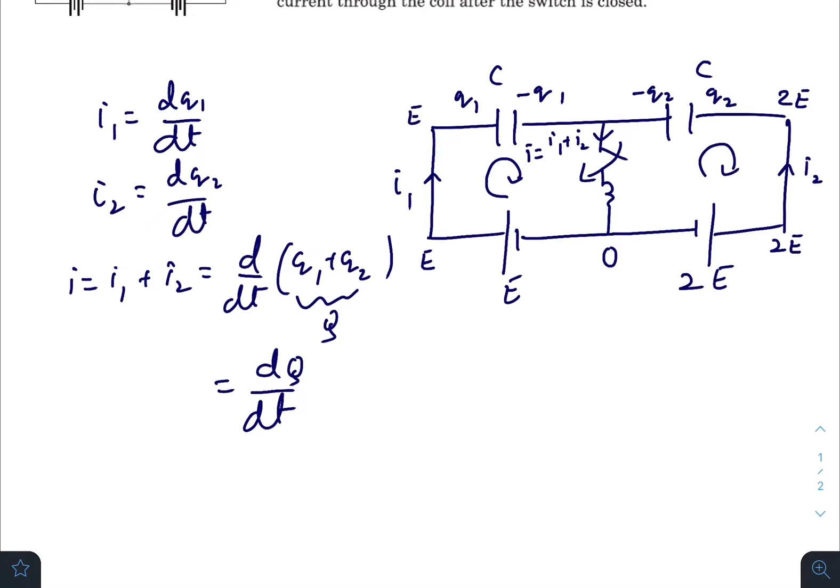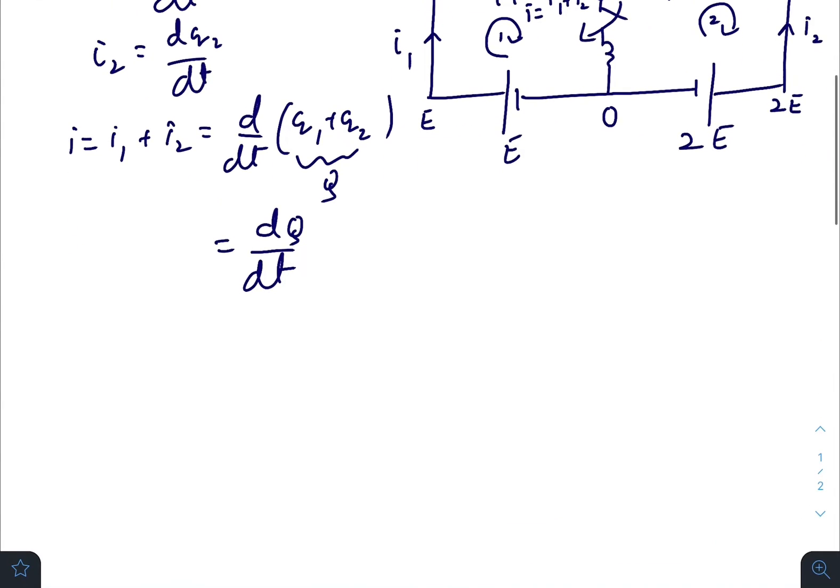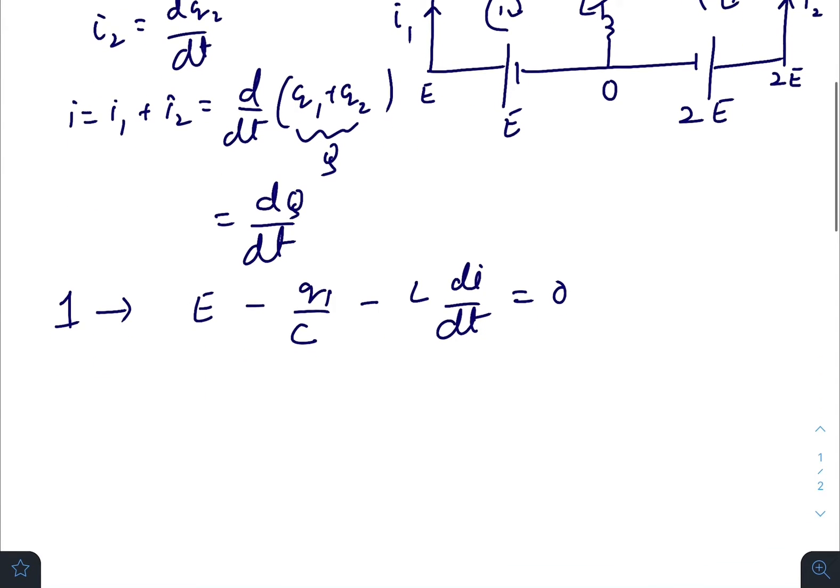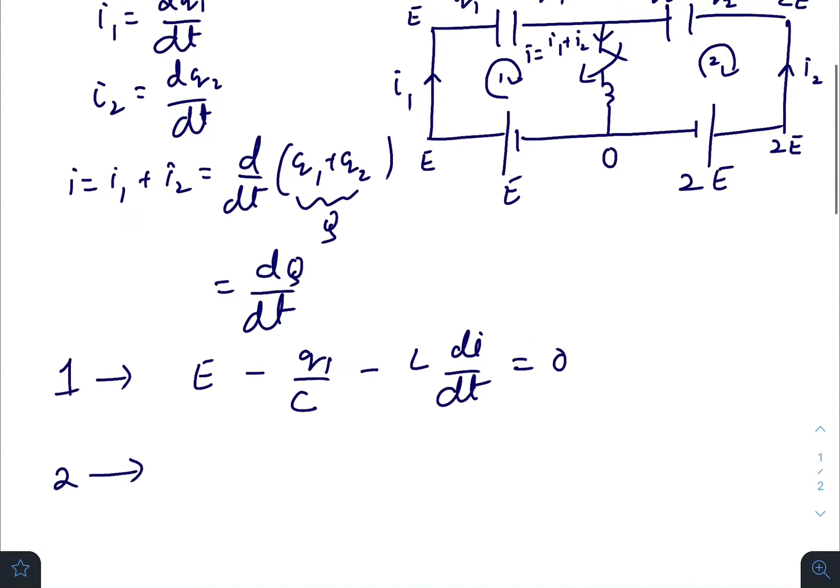From loop number one, applying Kirchhoff's voltage law: ε - q₁/C - L di/dt = 0. And from loop two you can write: 2ε - q₂/C - L di/dt = 0.